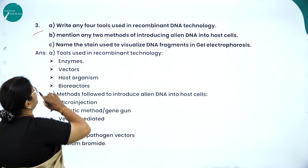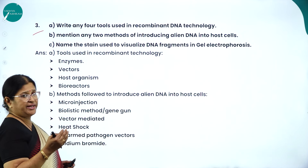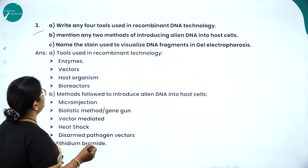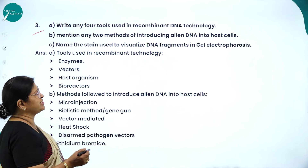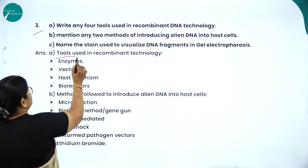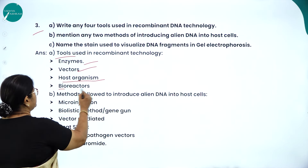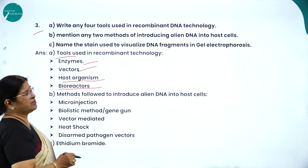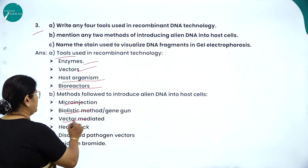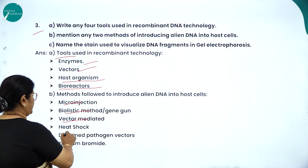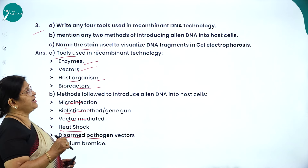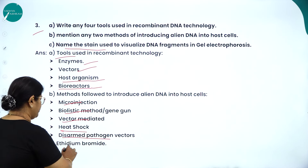Write any four tools used in recombinant DNA technology: enzymes, vectors, host organisms, and bioreactors. Two methods of introducing alien DNA into host cells: microinjection method, biolistic method (gene gun), heat shock method, and disarmed pathogen vectors. The stain used to visualize DNA fragments in gel electrophoresis is ethidium bromide.